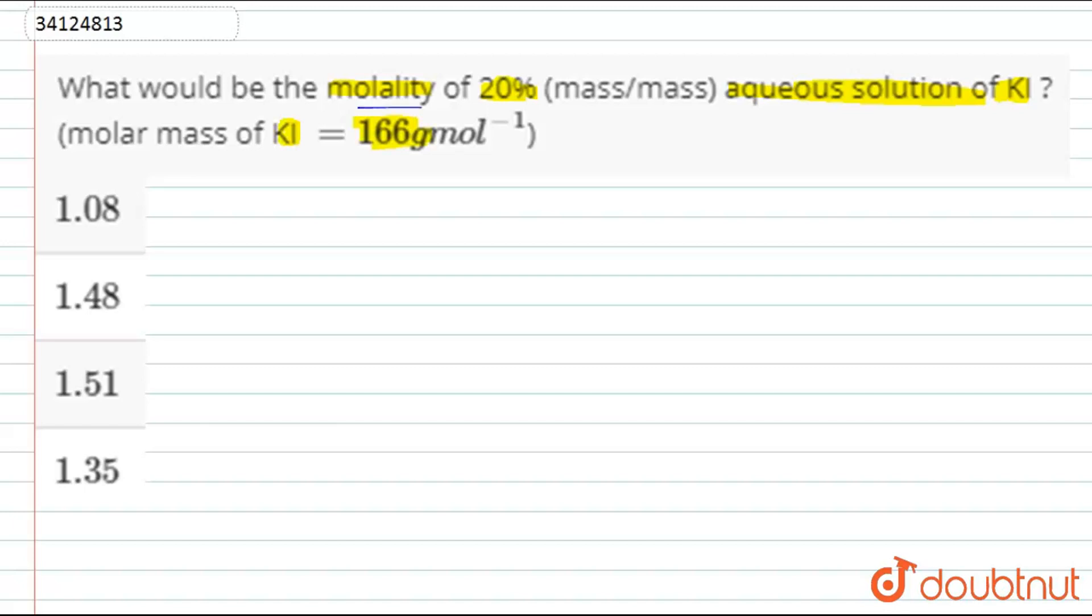We're asked how much the molality would be. Molality is equal to the number of moles of potassium iodide divided by the mass of solvent in kilograms. Look here, mass percentage is given.